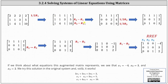Replacing row two with row two minus row one: 1 minus 1 is 0, 1 minus 1 is 0, 3 minus 1 is 2, and 5 minus 1 is 4. Replacing row three with row three minus row one: 1 minus 1 is 0, 4 minus 1 is 3, 1 minus 1 is 0, and 10 minus 1 is 9.